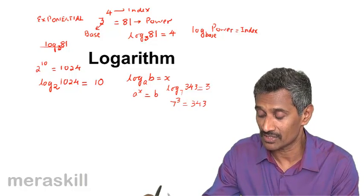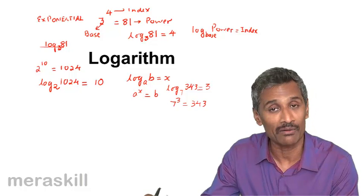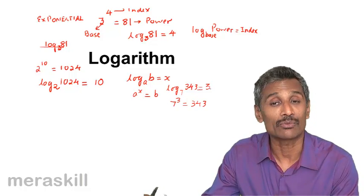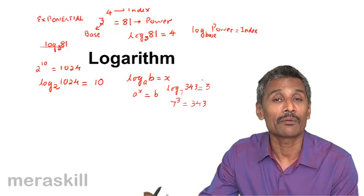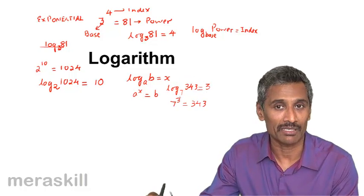The base raised to the index is 343. Log of the power to the same base equals the index. This is how we convert from index form to logarithmic form.